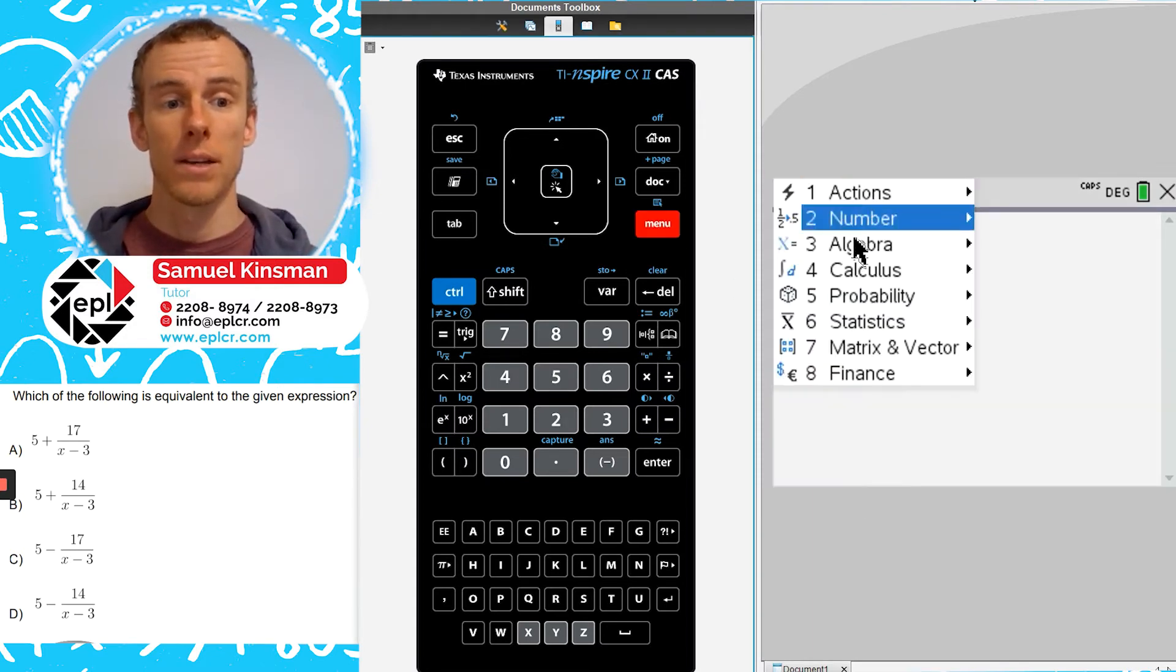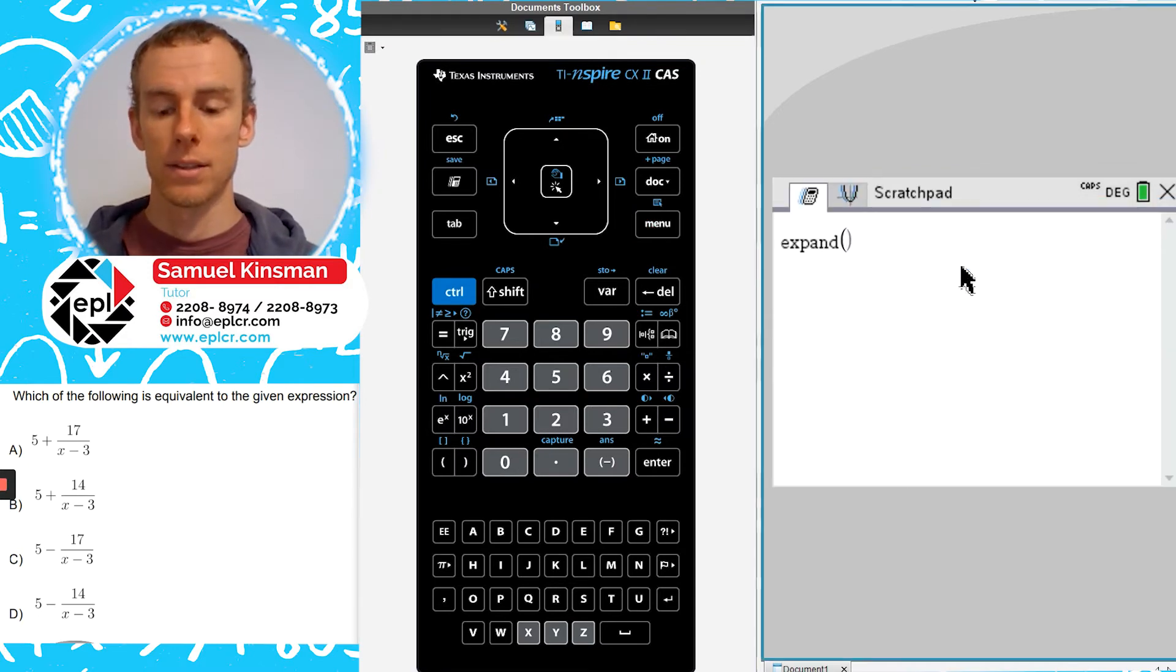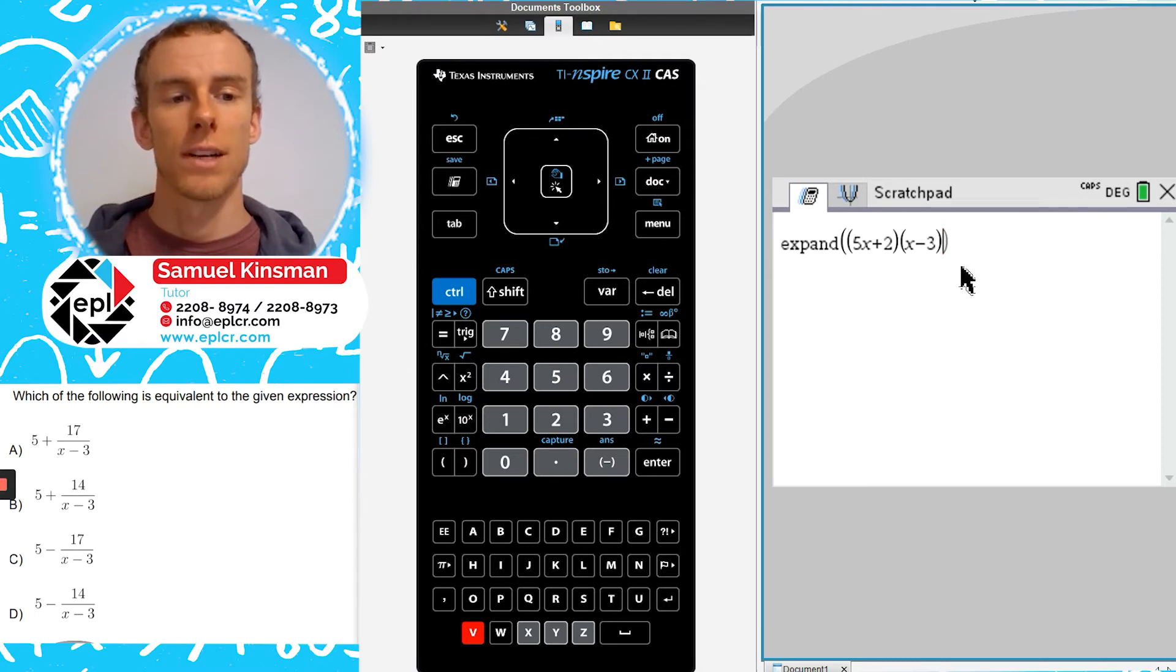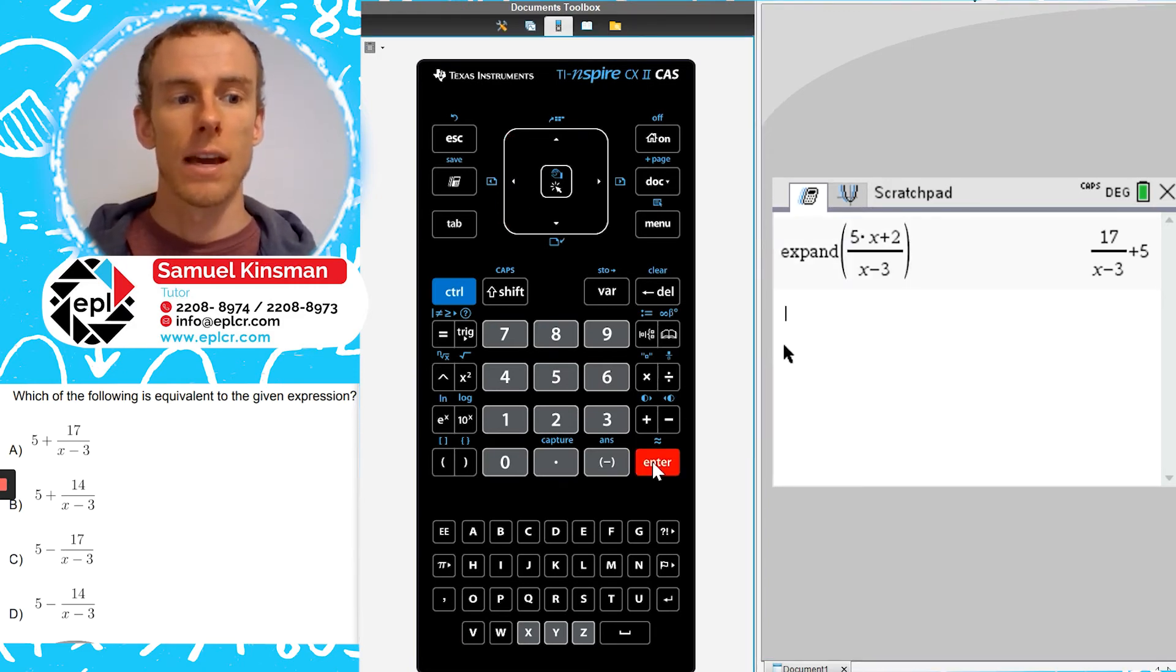So we're going to go to Menu, Algebra, Expand, and we're going to type in the expression 5x plus 2 divided by x minus 3, and we'll press Enter, and we get 17 over x minus 3 plus 5.